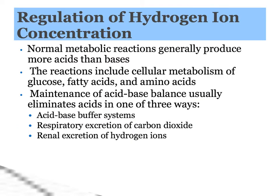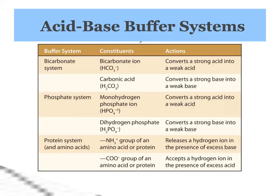The normal metabolic reactions — the cellular metabolism of glucose, fatty acids, and amino acids — tend to make us more acid. There are three ways that we try to deal with that excess hydrogen: there are the chemical buffer systems, then the respiratory system can kick in and help get rid of some acid, and then our kidneys are the third line of defense. The chemical buffer systems are basically three: the bicarbonate system, the phosphate system, and the protein system.